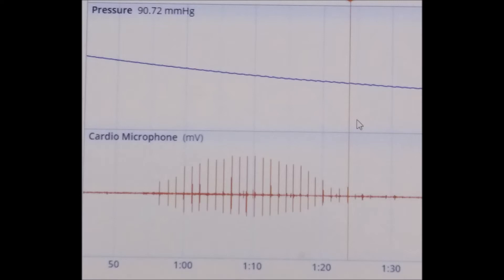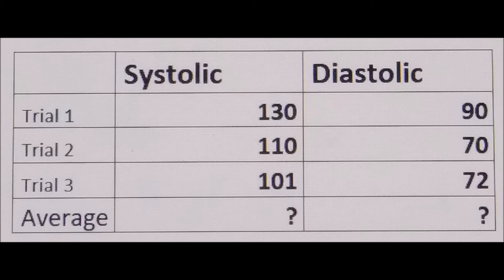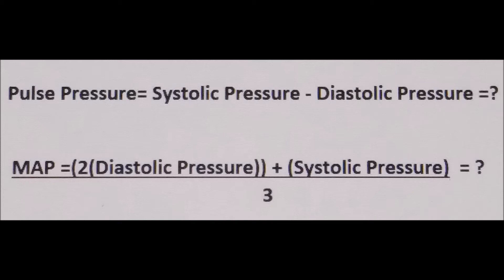Shortly, I will be presenting a table with the data gathered from three separate trials. Use this data to determine the average of the systolic and diastolic pressures. Use the averages calculated from the previous table to determine both the pulse pressure and the mean arterial pressure.